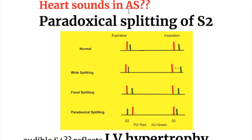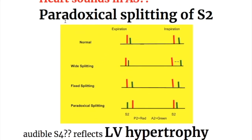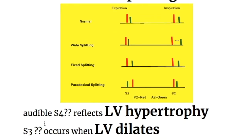Regarding heart sounds in aortic stenosis: there is paradoxical splitting of the second heart sound, where the pulmonary sound comes before the aortic valve closure. This occurs because of the delay in closure of the aortic valve. The fourth heart sound is also audible, reflecting the left ventricular hypertrophy, with the impulse displaced laterally and inferiorly.